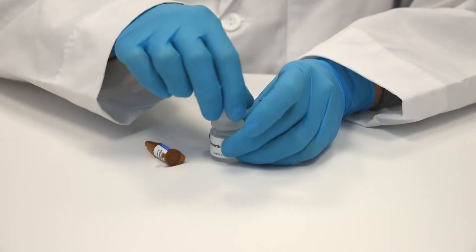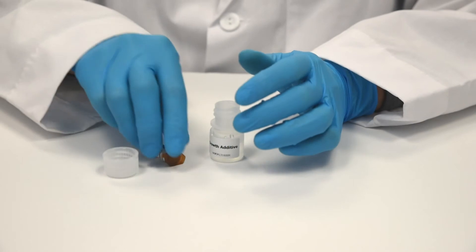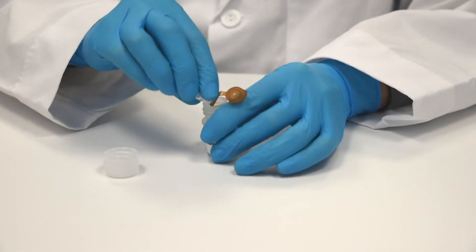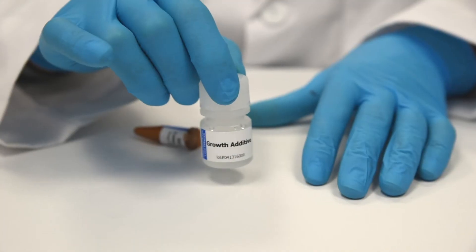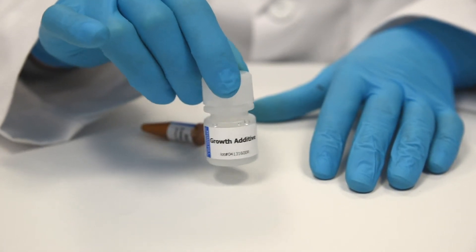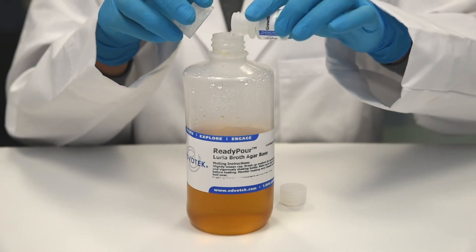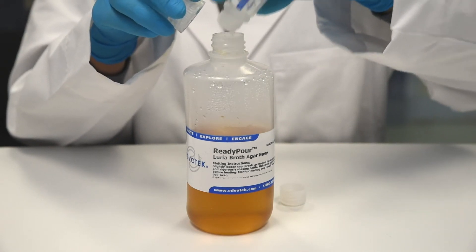Step 8: Add the entire amount of ampicillin to the bottle of growth additive and swirl to mix. Add this solution to the large bottle of ready pour agar, recap the bottle, and gently swirl to mix the reagents.